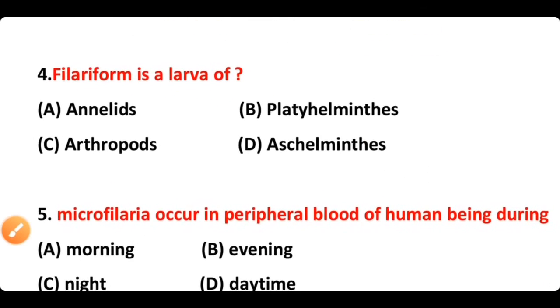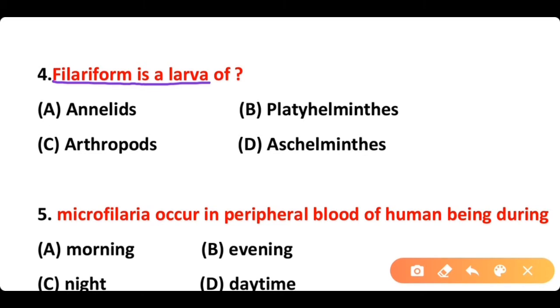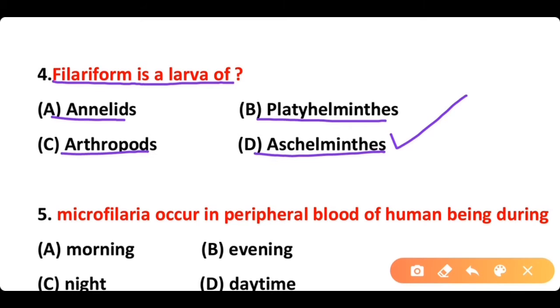Question number 4: Filariform is a larva of: A) Annelida, B) Platyhelminthes, C) Arthropoda, D) Aschelminthes. The correct answer is option D. Filariform is a larva of Aschelminthes.